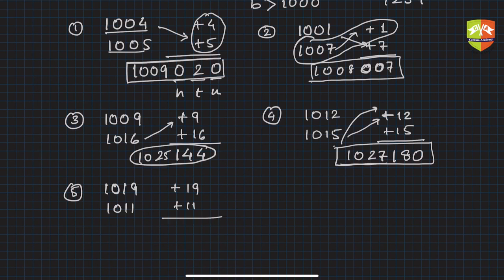So this is plus nineteen and this is plus eleven. If you multiply nineteen times eleven, that is 209. And if you do this sum, you will get 1030. So the product is 1030209.